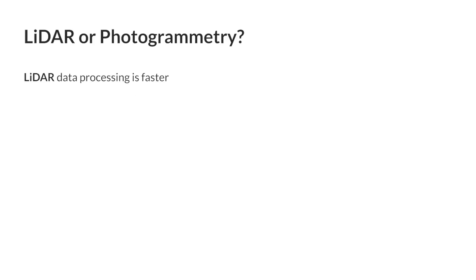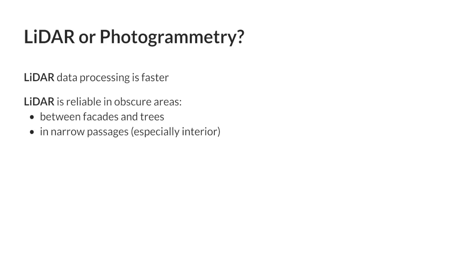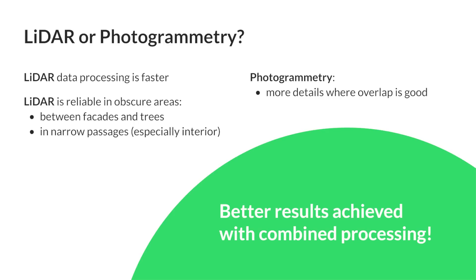To summarize: firstly, LiDAR data is processed much faster because in its nature this data is closer to the target result — the 3D surface — than images are. The points in the LiDAR point cloud already spatially describe the geometry we want to reconstruct. Secondly, LiDAR is more reliable in difficult-to-reach areas, for example between trees and facades, between closely located buildings, and in narrow passages — whether inner yards or staircases in interiors. On the other hand, the photogrammetry approach generates more detailed 3D surfaces provided that imagery overlap is good. Therefore, the best results of 3D surface reconstruction can be obtained by combined processing of imagery and LiDAR data.